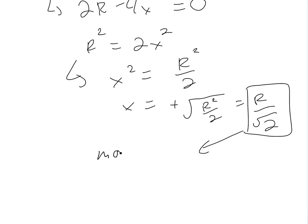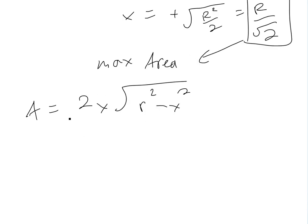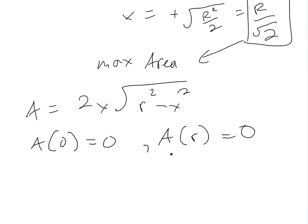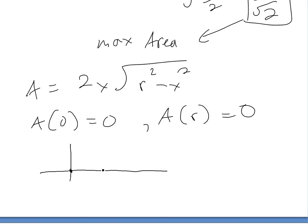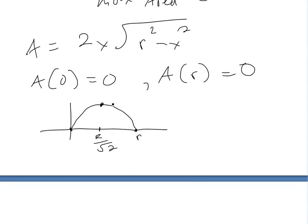This critical point gives the maximum area. Looking at the area function A = 2x√(r² − x²) at the endpoints: A(0) = 0 and A(r) = 0. Since there's only one critical point at x = r/√2 and the function is continuous on the domain with A always ≥ 0, the function must reach a maximum at that critical point.